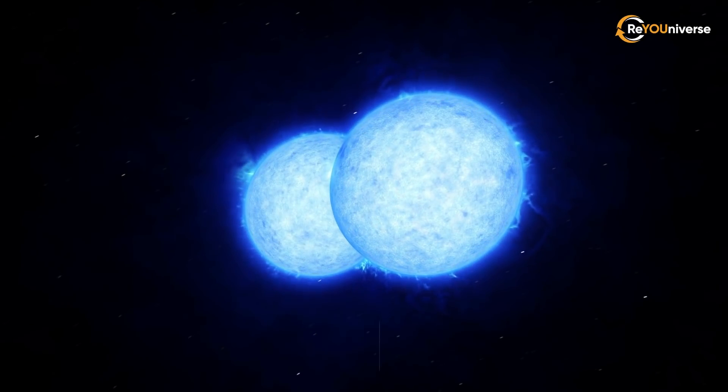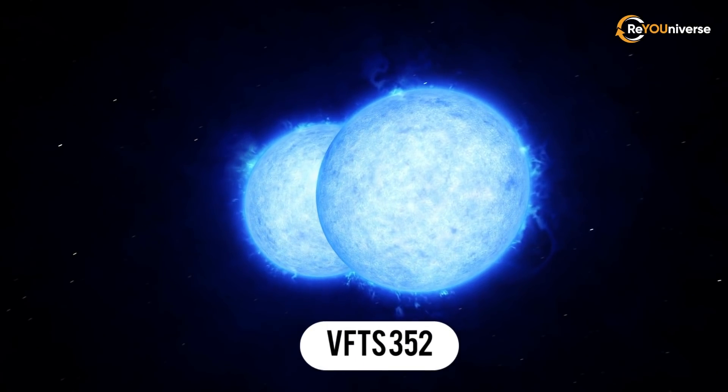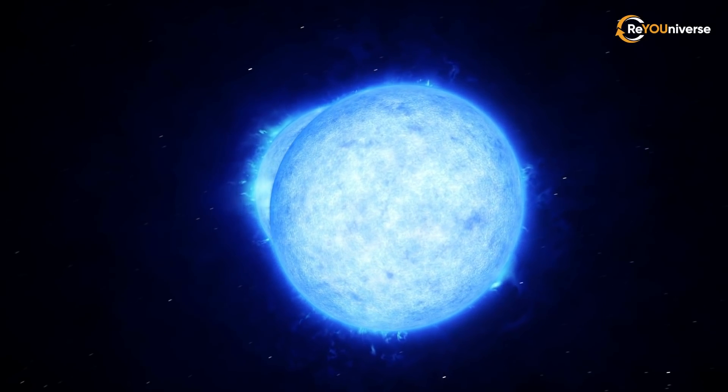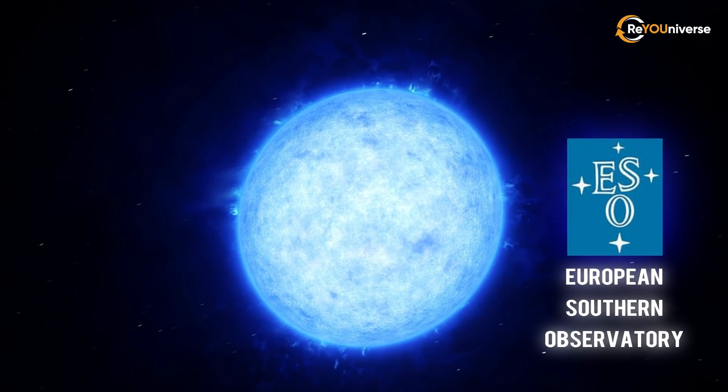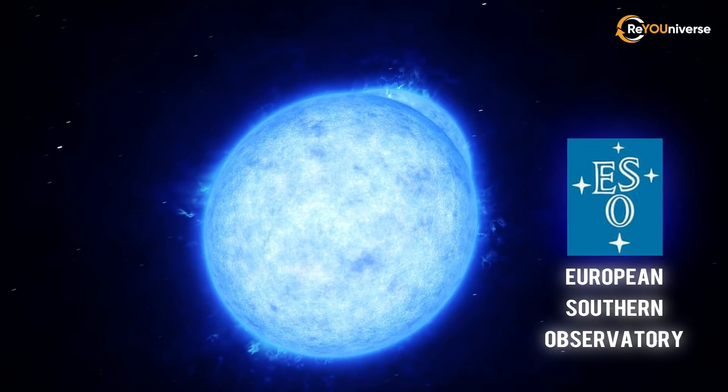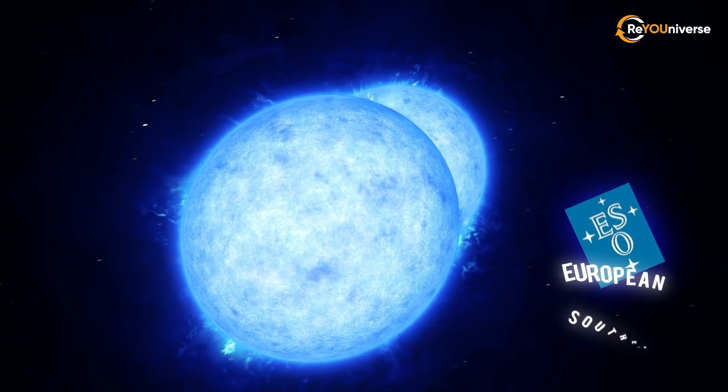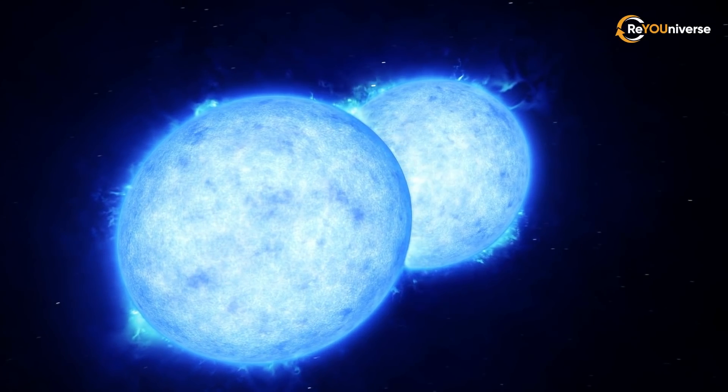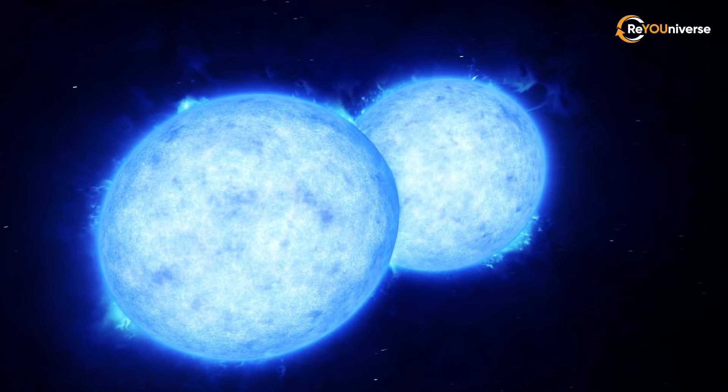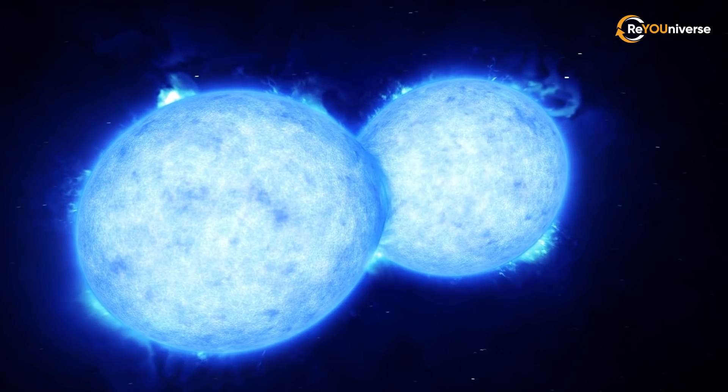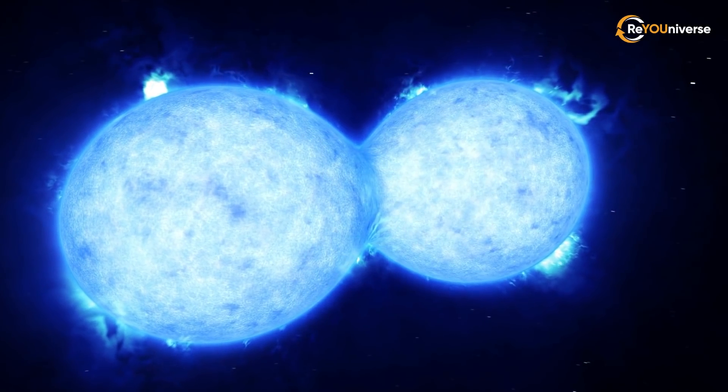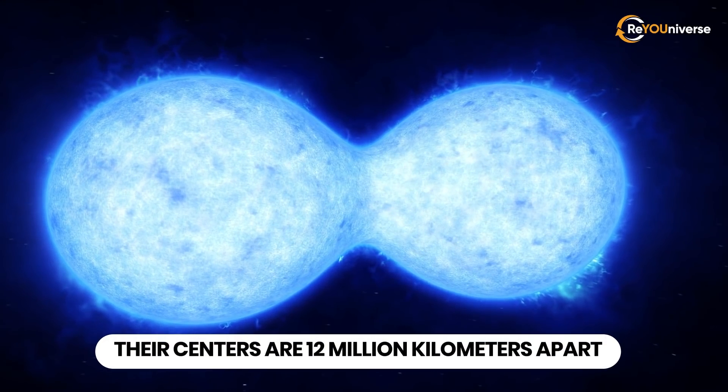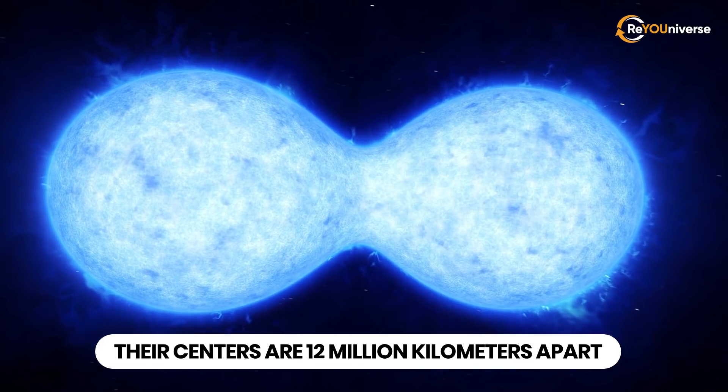As an example, let's consider a close binary system, VFTS-352. VFTS-352 was discovered by ESO, European Southern Observatory. It lies 160,000 light-years away from us, in the Tarantula Nebula. To date, VFTS-352 is the most massive and hottest object of this kind known to astronomers. In total, the stars weigh 57 solar masses. Their surface temperature reaches 40,000 degrees, and their centers are 12 million kilometers apart.